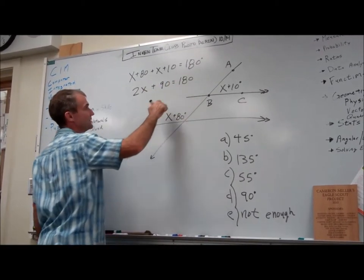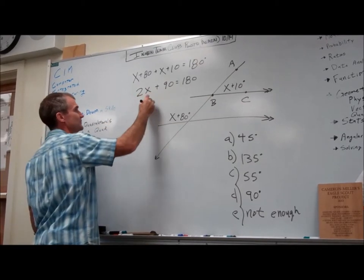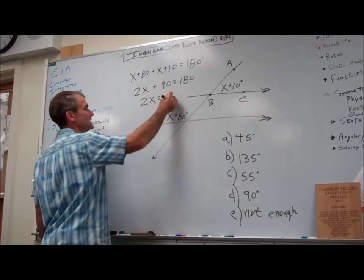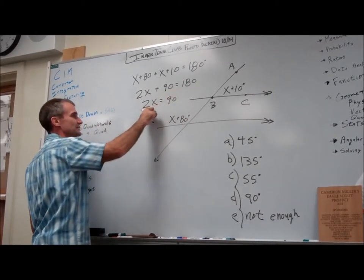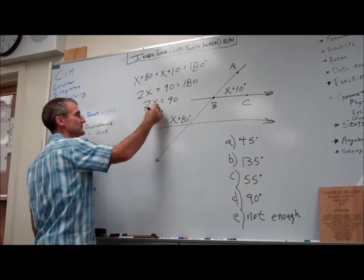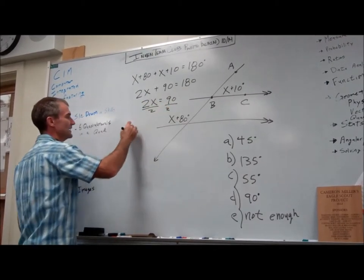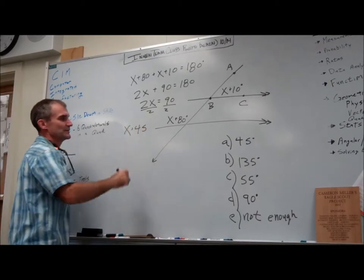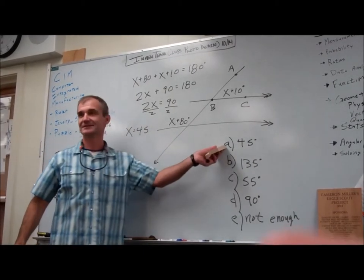This is a great SAT style problem. Subtract 90 from both sides. 2x is equal to 90. And then getting this by itself, I divide both sides by 2. And I get x is equal to 45.